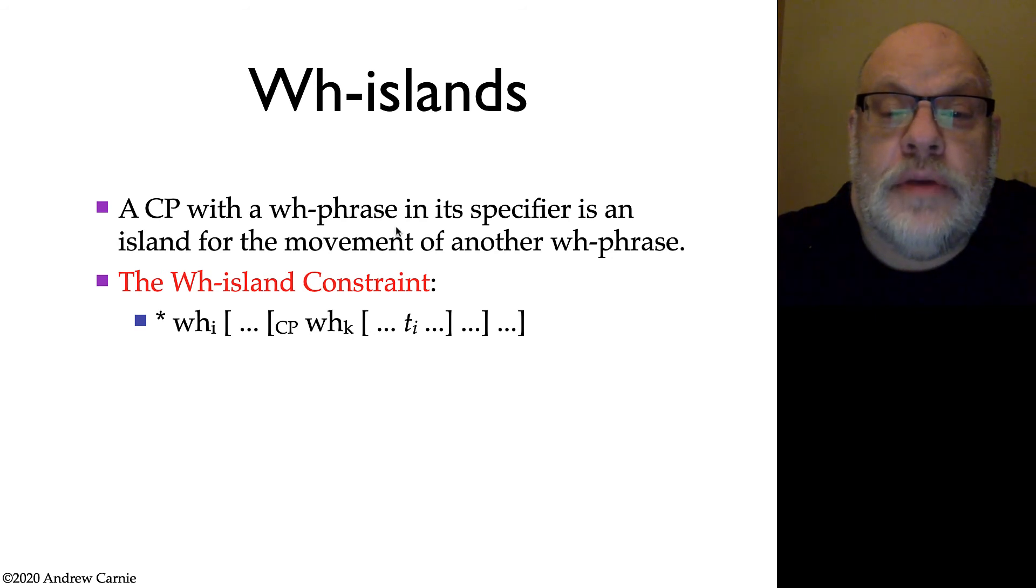The constraint we have that explains WH islands is called the WH island constraint. And what it says in words is a CP with a WH phrase in its specifier is an island for the movement of other WH phrases. In more formal terms, here we have a CP that has a WH element in its specifier and it blocks movement of other WH elements around it. WH elements are going to be important for us. They're the ones we're going to have the easiest time explaining. So we're going to come back to WH elements again.